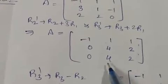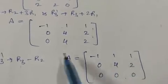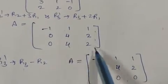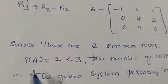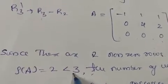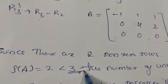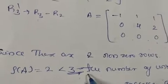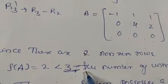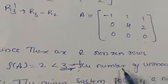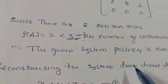Apply R3 → R3 minus R2, giving the third row as [0, 0, 0]. We have 2 non-zero rows, so the rank of this matrix is 2. Since rank 2 is less than the number of unknowns (3), the system has non-trivial solutions.